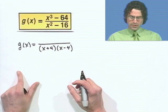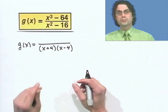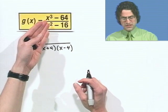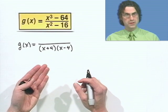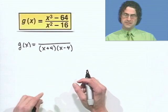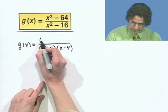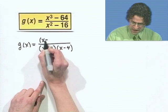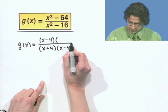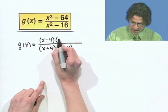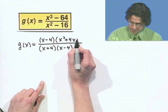And I look at the numerator and I ask, what about the numerator? Well, actually, that's the difference of two perfect cubes. This is x cubed and 64 is actually 4 cubed. So in fact, we know how to factor the difference of two perfect cubes. What do we see? We see x minus 4 times x squared plus 4x plus 16.